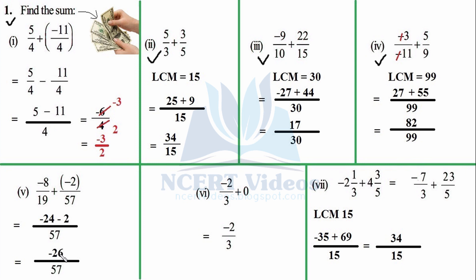Sixth part: here you don't have to do anything, because when you add 0 to any number, the number's value is retained. The answer is simply −2/3.